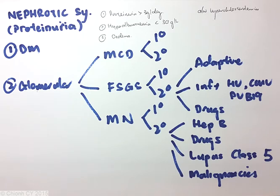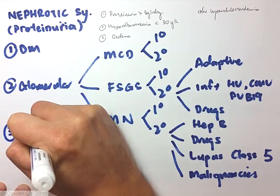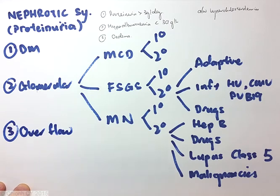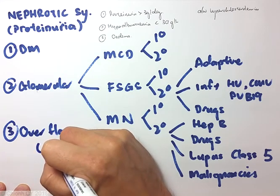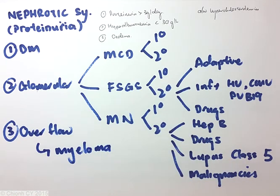Other causes which may present in a manner somewhat similar like nephrotic syndrome would include an overflow proteinuria. This usually is a manifestation of multiple myeloma, in that there is so much immunoglobulins in the blood that it overflows into the urine.